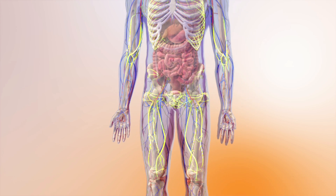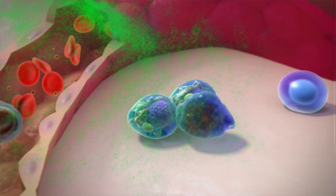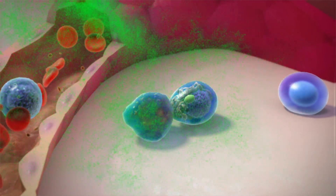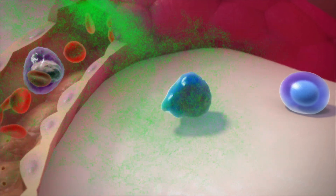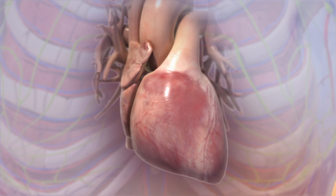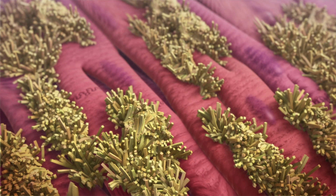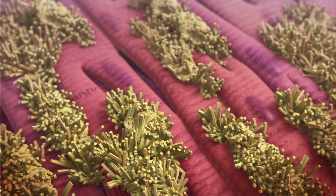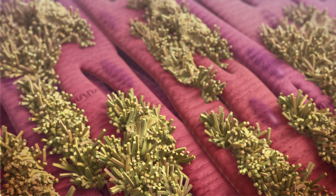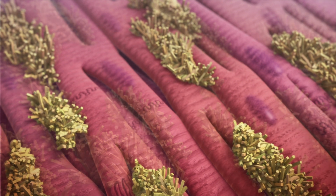Treatment for AL amyloidosis involves chemotherapy, steroids, high-dose therapy and stem cell transplant, and other drugs. Treatment is aimed at reducing the plasma cells to stop further amyloid light chains being made that would otherwise build up in tissues and organs. It also gives the body a chance to break down existing deposits naturally. However, on its own, this process can take many months or years.